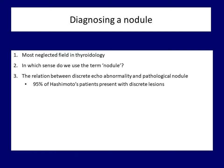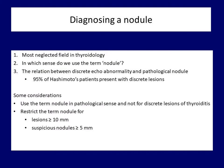A separate chapter will be devoted to this problem later in the course. The relation between a discrete lesion on ultrasound and a pathological nodule is not clarified, and this will be discussed in detail later. Some considerations: firstly, it is preferred to use 'nodule' in a pathological sense and not to use this term for discrete echo abnormalities of Hashimoto's thyroiditis, which may be either more active foci of thyroiditis or areas not influenced by thyroiditis.